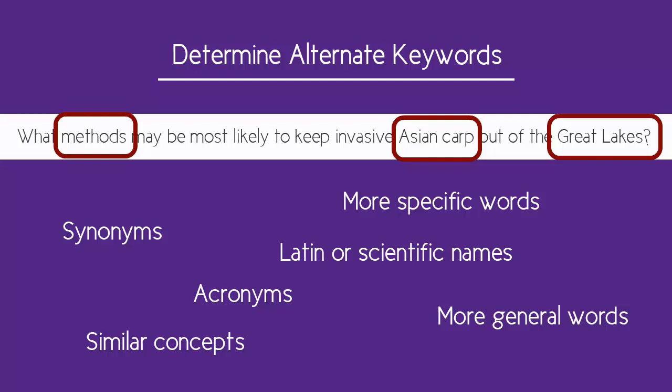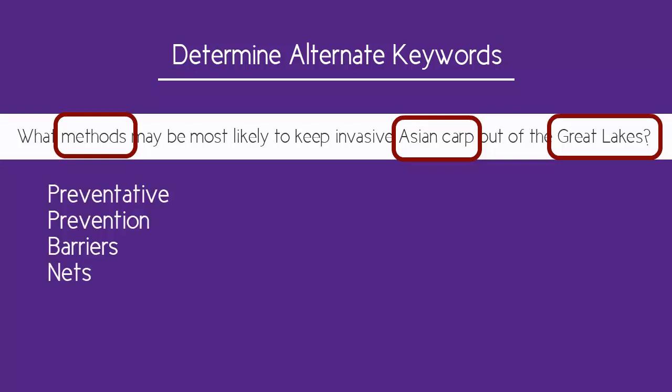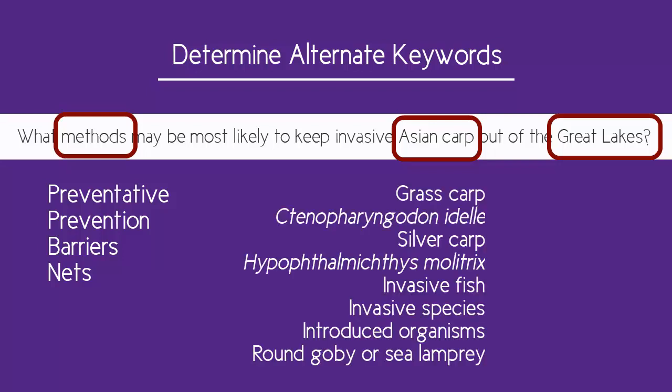There isn't a magic single search for your topic. You will need to do several searches using various combinations of your alternative keywords to find all the information you need. For my topic, I came up with these alternative keywords. For methods: preventative, prevention, barriers, nets. For Asian carp: specific species like grass carp or silver carp, or their Latin names.